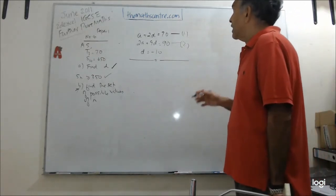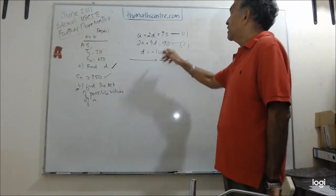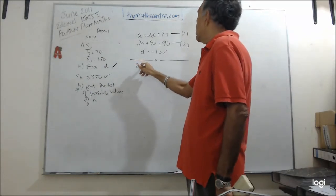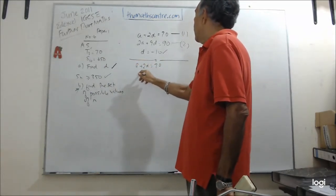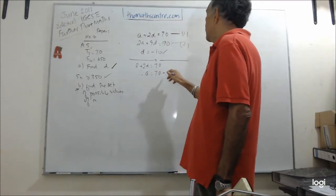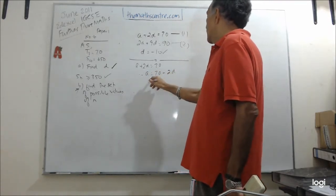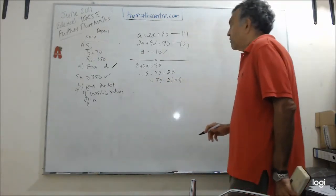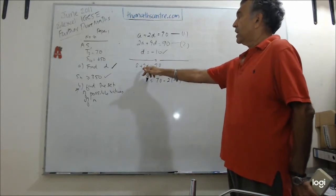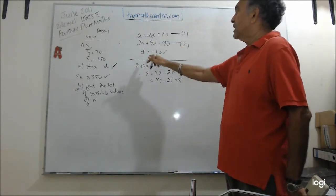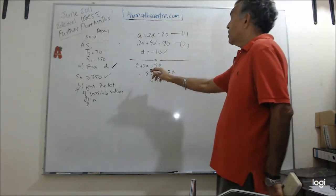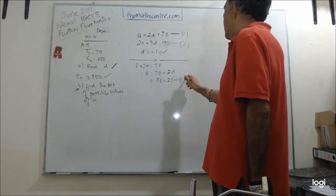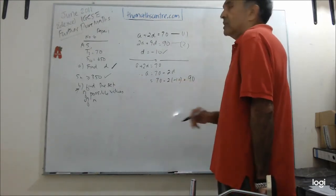So in the first part of the question, in part A, we found D is negative 10. So let's go ahead and find A, the first term. So A plus 2D is 70. Therefore A equals to 70 minus 2D. D is minus 10. A will be 70 minus 2D, plug in negative 10. What is this? 70 plus 20 is 90.